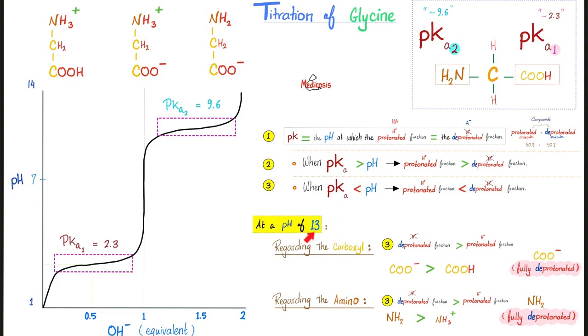But before we reach 13, we were at 9.6. And at this moment, the pKa2 equals the pH. Therefore, I am here. I am plateauing. The pH is not increasing or decreasing. When the pH is not changing, what do you call this? A buffer.